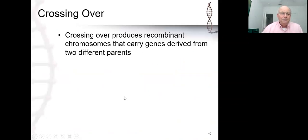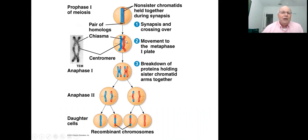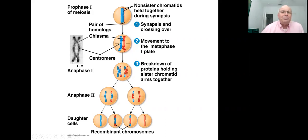Crossing over involves the exchange of DNA between non-sister chromatids. Here you can see the formation of the chiasmata in an electron microscope image — this is clearly in prophase one since there's no spindle visible. You can see the chiasmata and therefore the crossing over between the chromosomes.